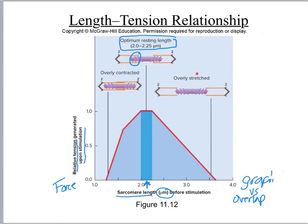If you do not have constant overlap, you get a situation where only a tiny section of the thick and thin filaments are overlapping, which means you can only have a few cross-bridge attachments.